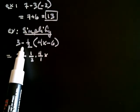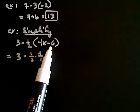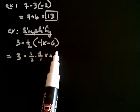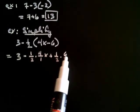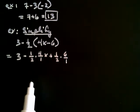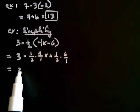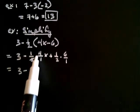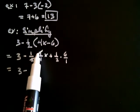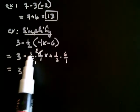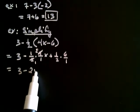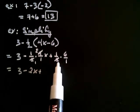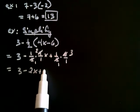Negative 1 half times negative 6 — a negative times a negative is a positive. After that, I get 1 half times 6 over 1. So I get 3 minus, well, 2 goes into 4 — this becomes a 1 and this becomes a 2 — so it's minus 2x, and then plus, well, 2 goes into 6 three times, so it's a 1 and a 3. So, minus 2x plus 3.